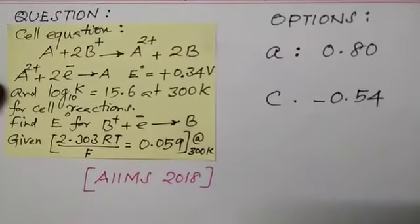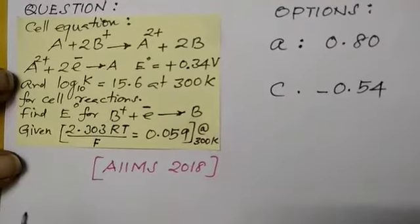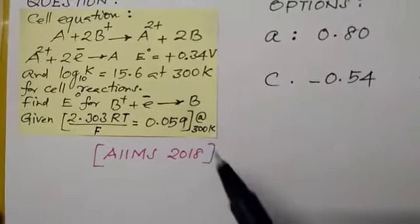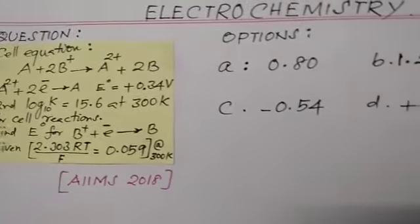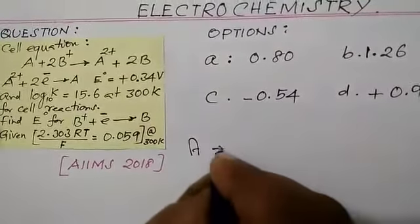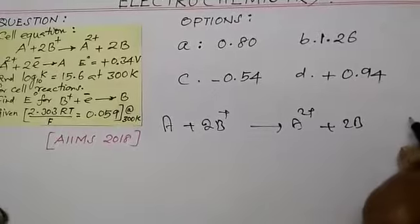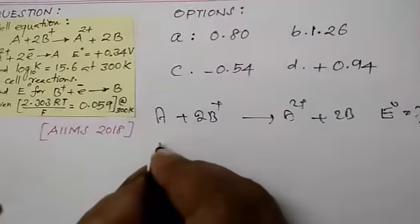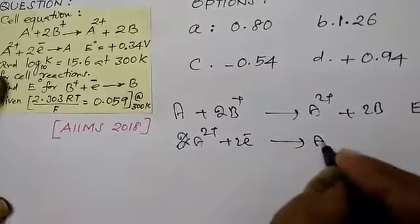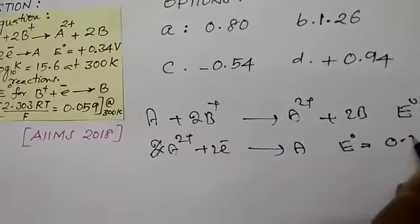The log K value is 15.6 at 300 K for the overall cell reaction. Find out the E° for the other part of the cell reaction. You are provided with the data and the value 0.059 at 300 K. Now let us approach the question. First, let us write the equation. Given cell equation: A + 2B⁺ gives A²⁺ + 2B. This is the overall reaction — E° is unknown. The next part of the reaction is: A²⁺ + 2e⁻ gives A, and for this reaction E° is equal to +0.34 V.